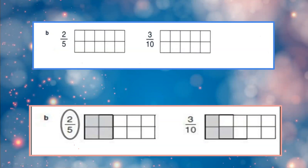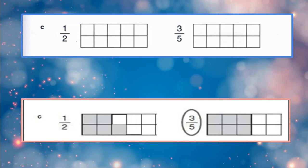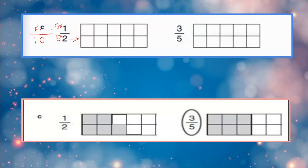Now we are solving the C part. The rule is the same. The grid doesn't give 2 boxes — count and it's 10. If I am changing this 1 upon 2 into tenths, I multiply by 5, and apply the same to the numerator: 1 becomes 5. So it is basically 5 upon 10. How many shades to color? 5 boxes. You can choose any 5.